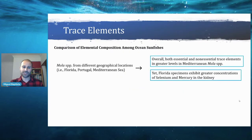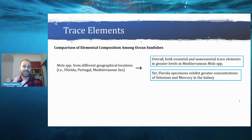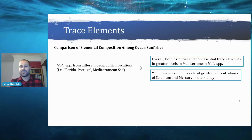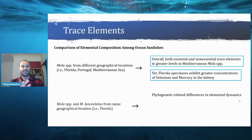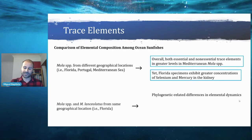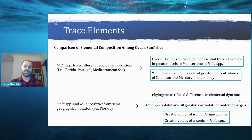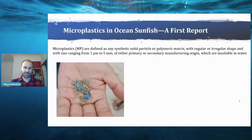Comparing Mola species from three geographical locations — Portugal and the Mediterranean Sea — both essential and non-essential trace elements were found at greater levels in Mediterranean specimens, as the Mediterranean is known for heavy pollution. Florida specimens exhibited the greatest concentrations of selenium and mercury in the kidney. When comparing Mola species from Florida, we found phylogenetically related differences in elemental dynamics: Mola species exhibited overall greater elemental concentration in the gills, while greater iron values were found in Masturus lanceolatus and greater arsenic values in Mola species.